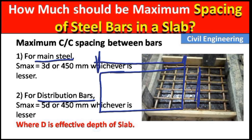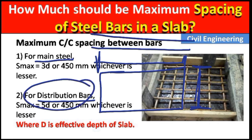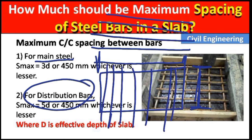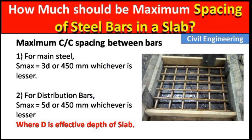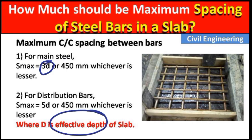Distribution bars are laid in the longest direction, and main bars are laid in the shortest direction. So for main bars, the maximum spacing will be 3d, where d is the effective depth.